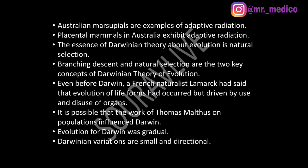Even before Darwin, French naturalist Lamarck had said that evolution of life forms had occurred, but driven by use and disuse of organs. It is possible that the work of Thomas Malthus on population influenced Darwin. Evolution for Darwin was gradual. Darwinian variations are small and directional — questions frequently come from this line.